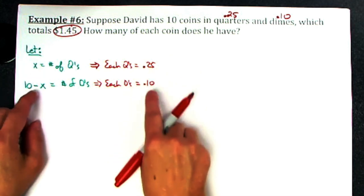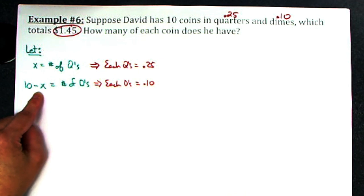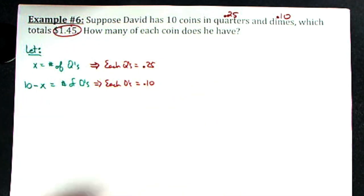When I go to write my equation, the number of dimes is 10 minus x. To find out in money, I would have to multiply by 0.10. From there I think we're good to write our equation.